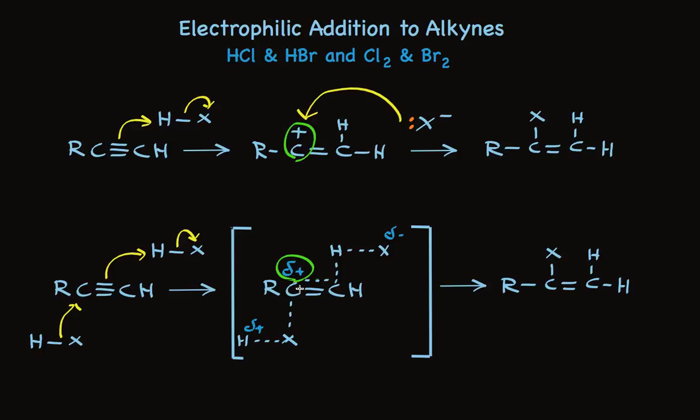The proton adds so we put the positive charge on the carbon that bears the alkyl group, which is the more stable one. The more stable transition state or intermediate is formed faster, so that positional selectivity predominates.